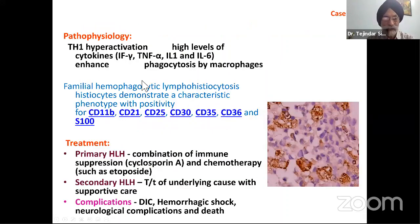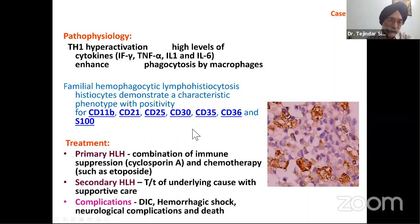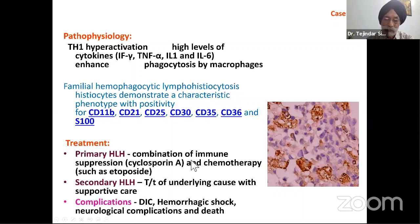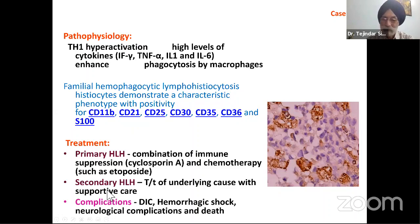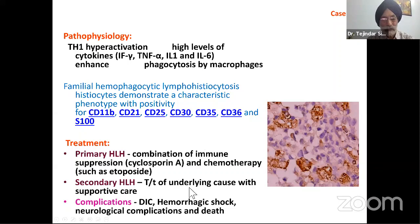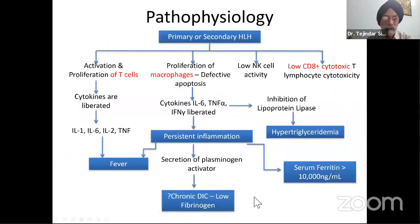The macrophages in HLH also show positivity with CD11B, CD21, CD25, CD30, CD35, and S100. Treatment: in primary HLH, which is hereditary, there is a combination of immunosuppression using cyclosporine A and etoposide. However in secondary HLH, which we come across every day, we have to treat the underlying bacterial or viral disease along with supportive care. Complications include DIC, hemorrhagic shock, and neurological complications.